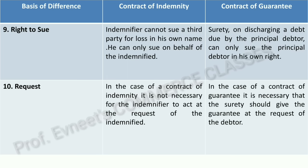Ninth — right to sue: in a Contract of Indemnity, the indemnifier cannot sue a third party for the loss in their own name — they can only sue on behalf of the indemnified. So if the loss was caused by a third party, the indemnifier can recover from that third party only in the name of the indemnified. In a Contract of Guarantee, however, the surety can sue in their own name — once they have discharged the principal debtor's debt by paying the creditor, they can file a case in their own name against the principal debtor to recover the money.